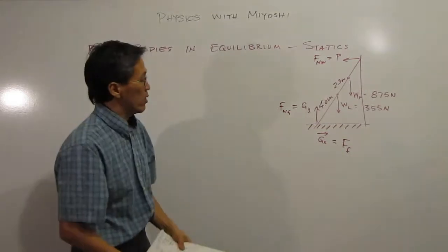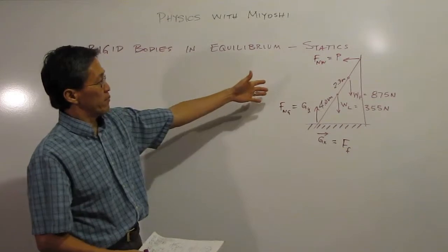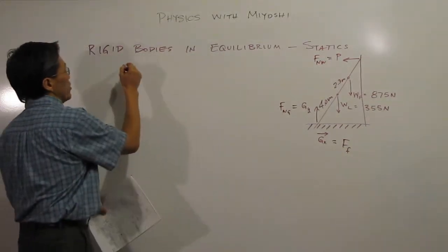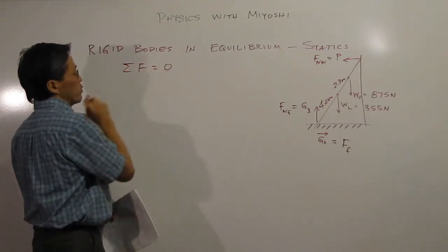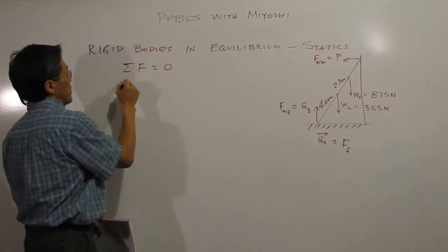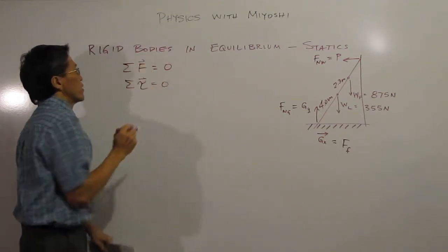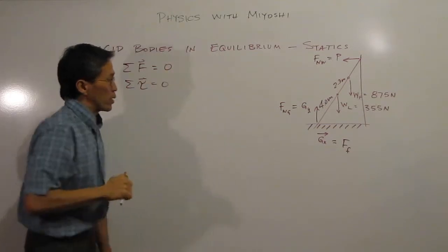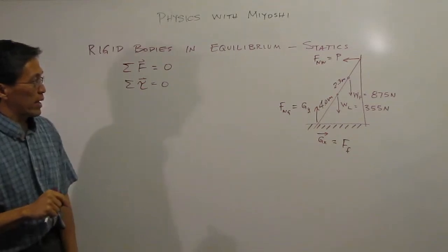To find these forces, we use the same approach as before: in static equilibrium, the sum of our forces equals zero and the sum of our torques equals zero. We'll break forces into x and y components, and then handle our torques separately.